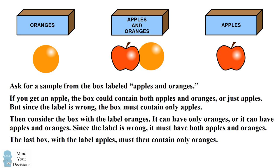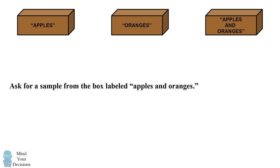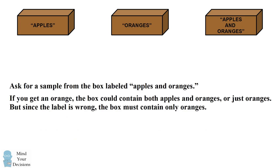So just by getting the one sample, we could correctly label all of the boxes. Now I've gone through the case where you would get an apple from your sample. What would happen if instead you got an orange?